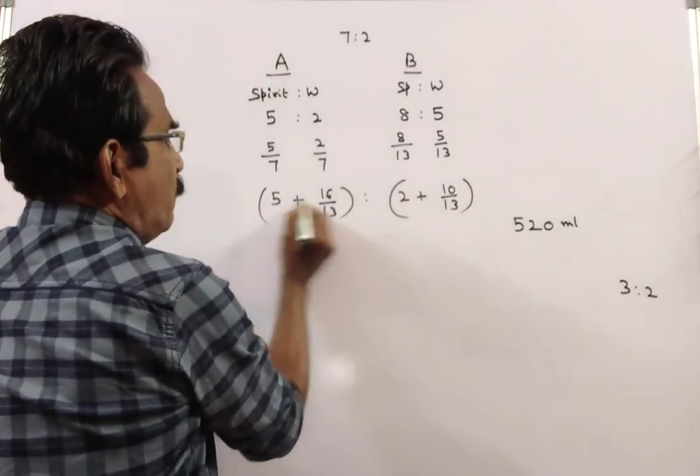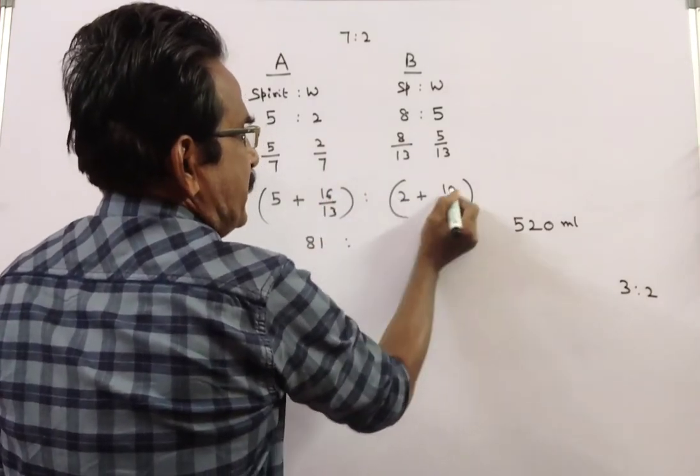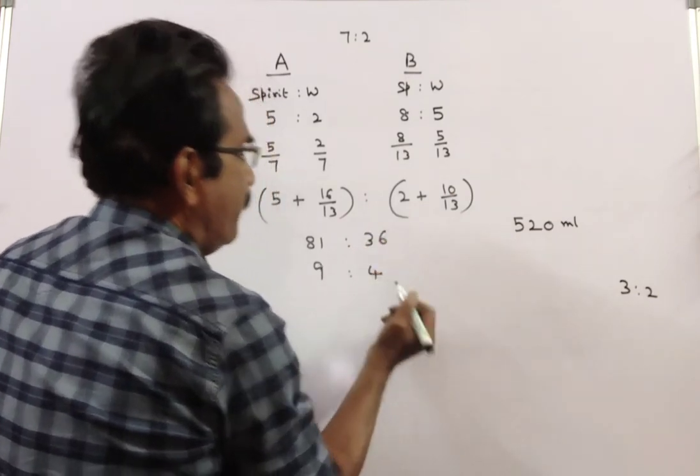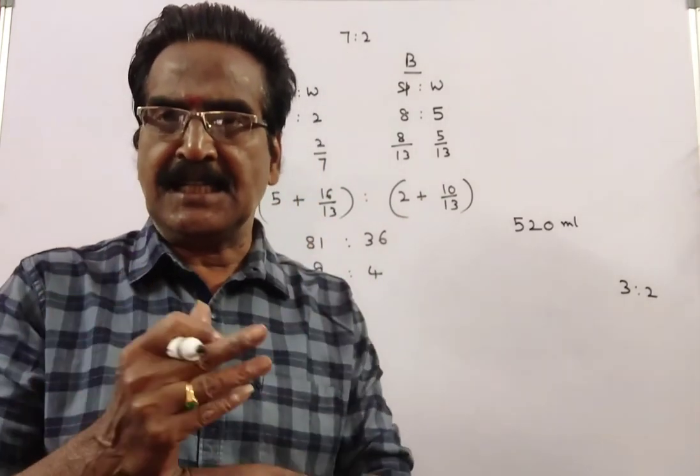So, 65 plus 16 is 81, 26 plus 10 is 36, 9 nines, 9 fours. Friends, this is the ratio of spirit and water in the resultant solution.